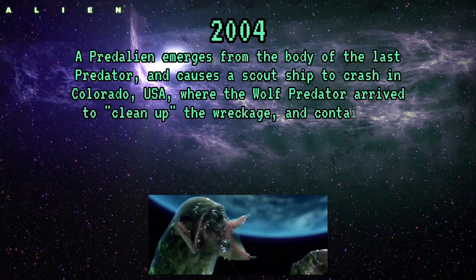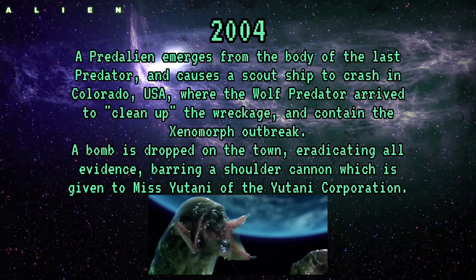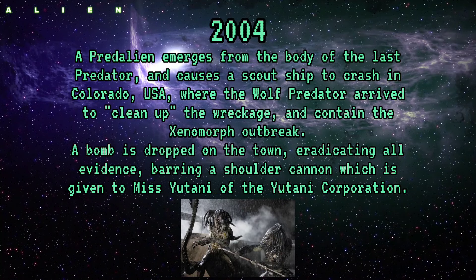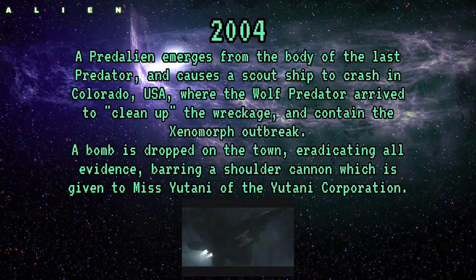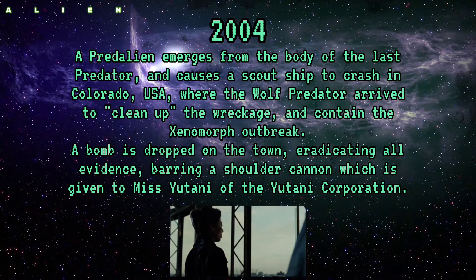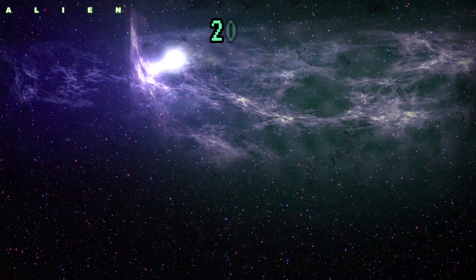A Predalien emerges from the body of the last predator and causes a scout ship to crash in Colorado, USA, where the Wolf Predator arrives to clean up the wreckage and contain the Xenomorph outbreak. A bomb is dropped on the town eradicating all evidence, barring a predator shoulder cannon which is given to Miss Yutani of the Yutani Corporation.